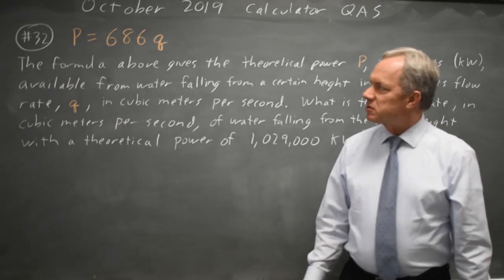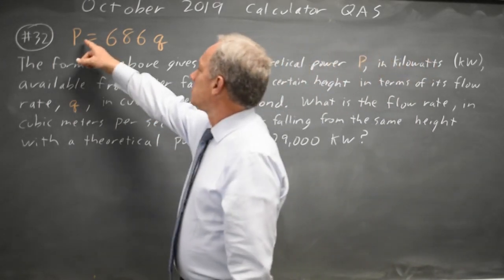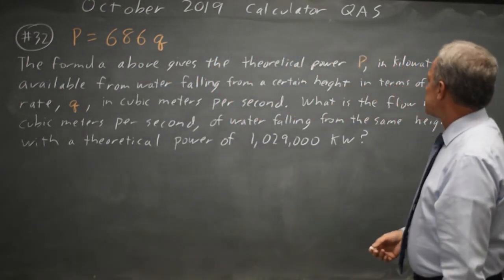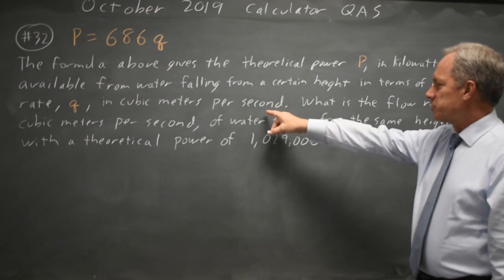This is question 32. College Board gives us a formula for power as a function of flow rate, where power is in kilowatts and flow rate is in cubic meters per second.